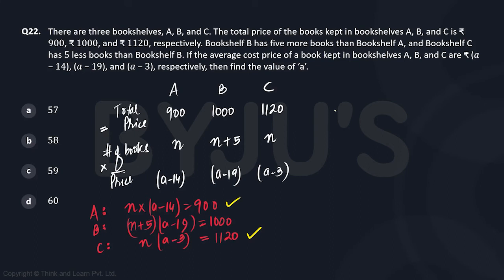So if we divide, we will have [n×(a-3)] / [n×(a-14)] = 1120/900. Zero as in 10 gets cancelled out - half of that is going to be 56, half of 90 is going to be 45. And n also gets cancelled out.